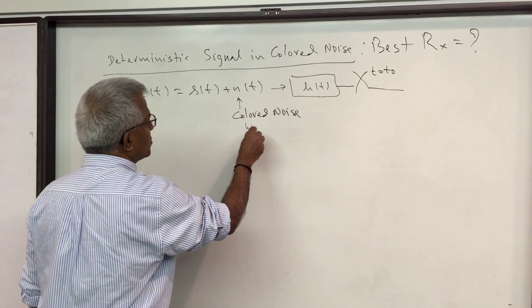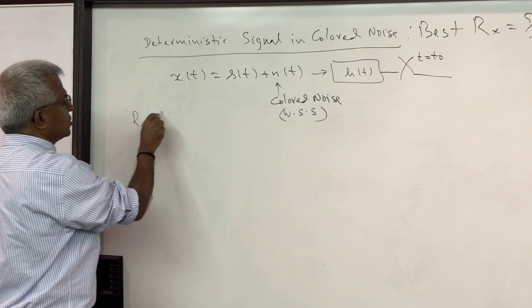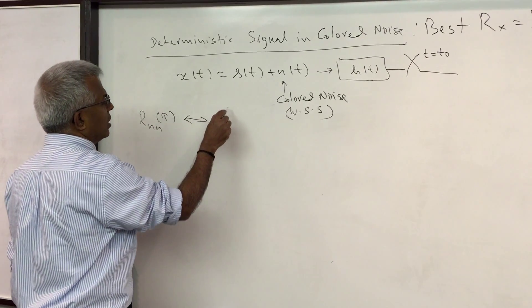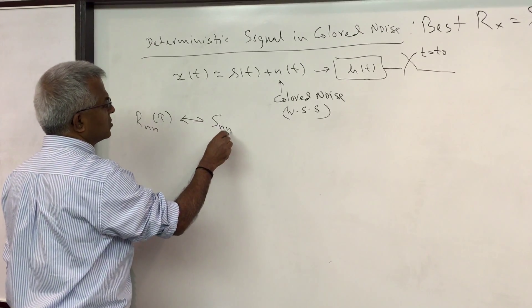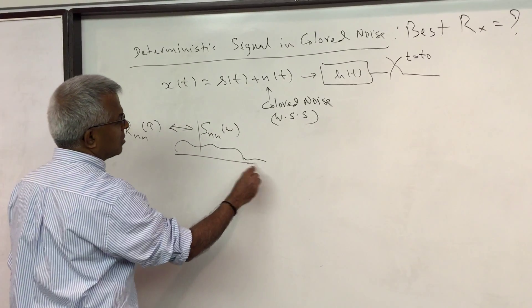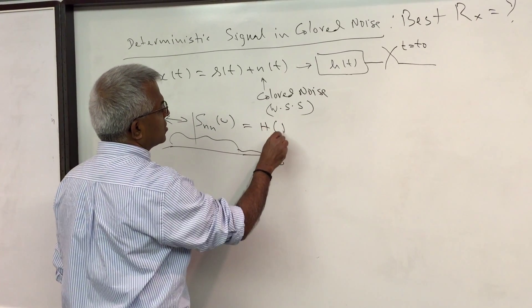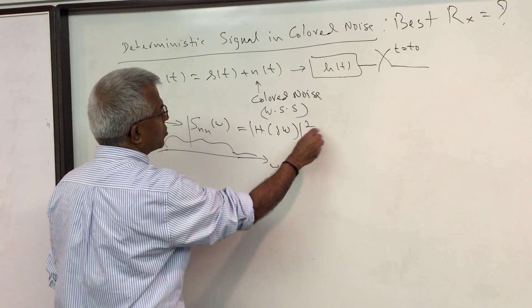That means the noise is of course I'm assuming wide sense stationary with some autocorrelation function R(τ) and some power spectrum S(ω). It has some shape, so under some conditions this can be written as the square magnitude of a filter.